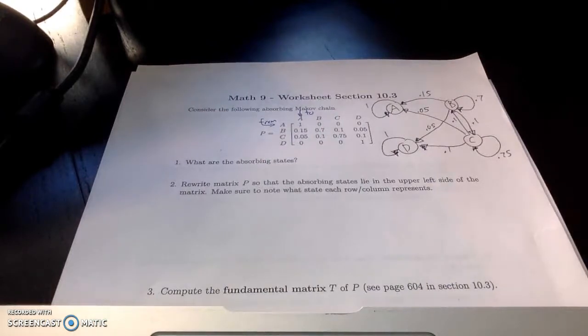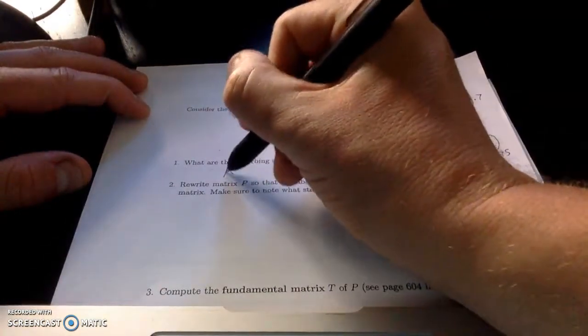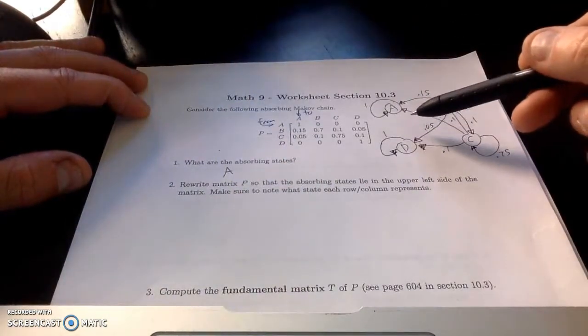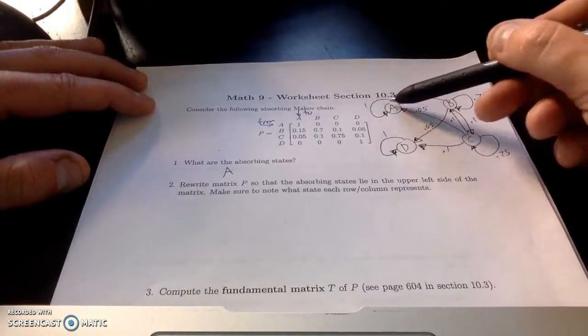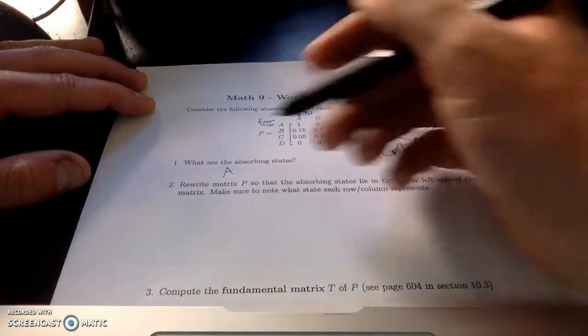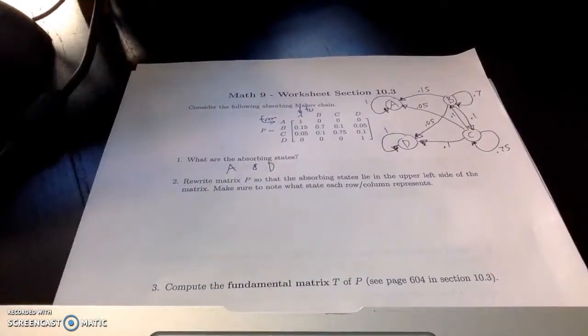So when we look at this, the absorbing states in this case are A. Imagine if there's a population or people. If you get to state A, you're stuck. You're staying in state A. And also state D is an absorption state.